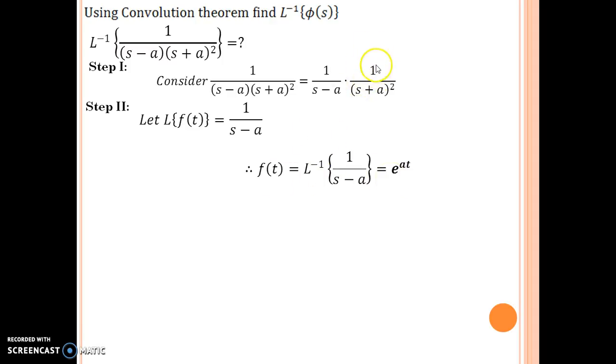Having done that, similarly we go for 1 upon s plus a the whole square. So if you let it as g of t, then you obtain g of t is equal to L inverse of 1 upon s plus a the whole square is equal to e to the power minus a t times t. We are done with finding f and g.